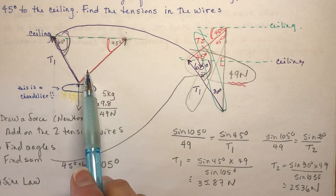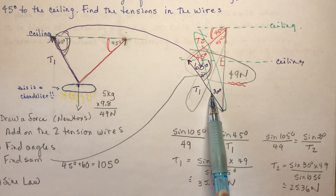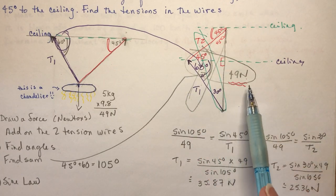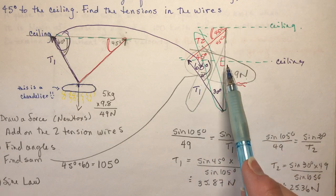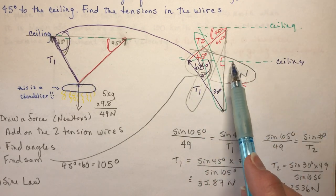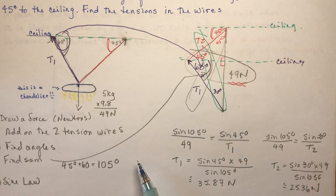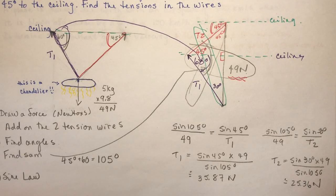To summarize: all we had to do was draw the diagram, make a force diagram, and add in the vectors that add up to the resultant of 49 newtons. Make sure we put all the angles in by drawing the two ceilings — that helps you find each vector's angle with the ceiling. Add those two angles together, then use the sine law to find the tensions.